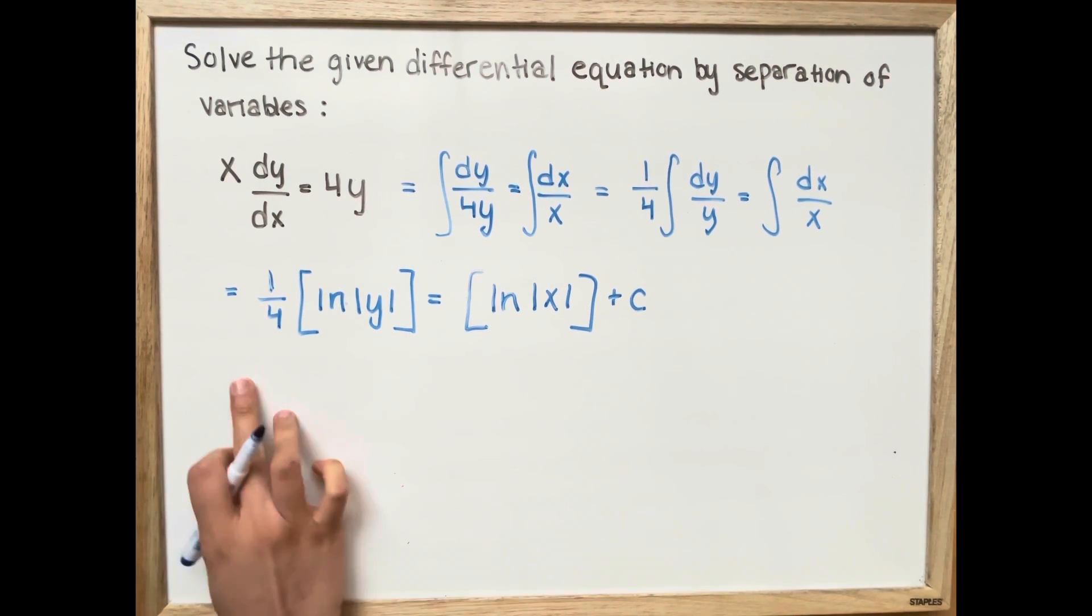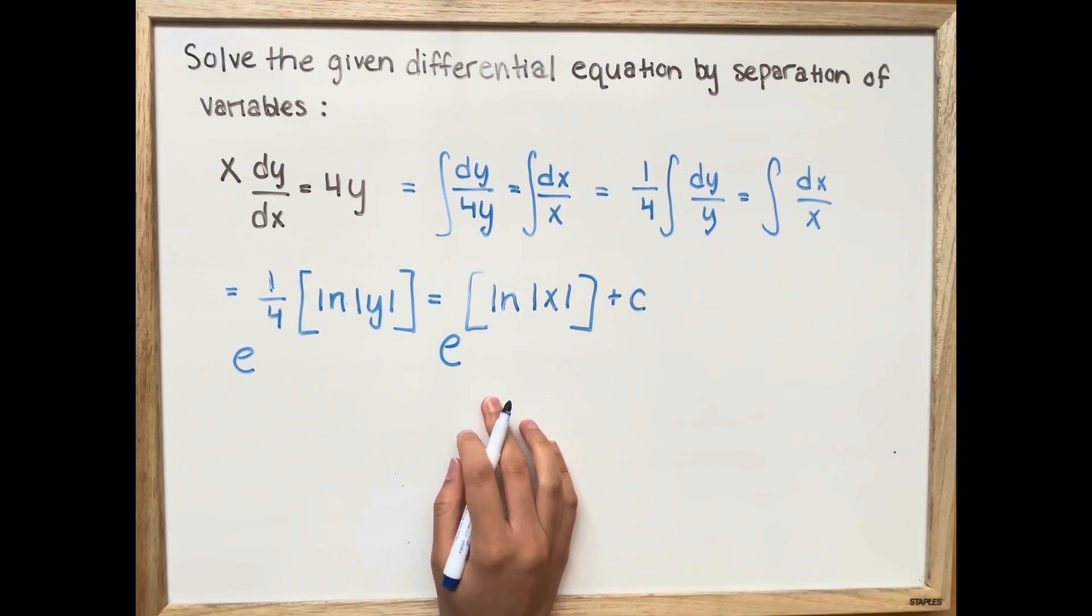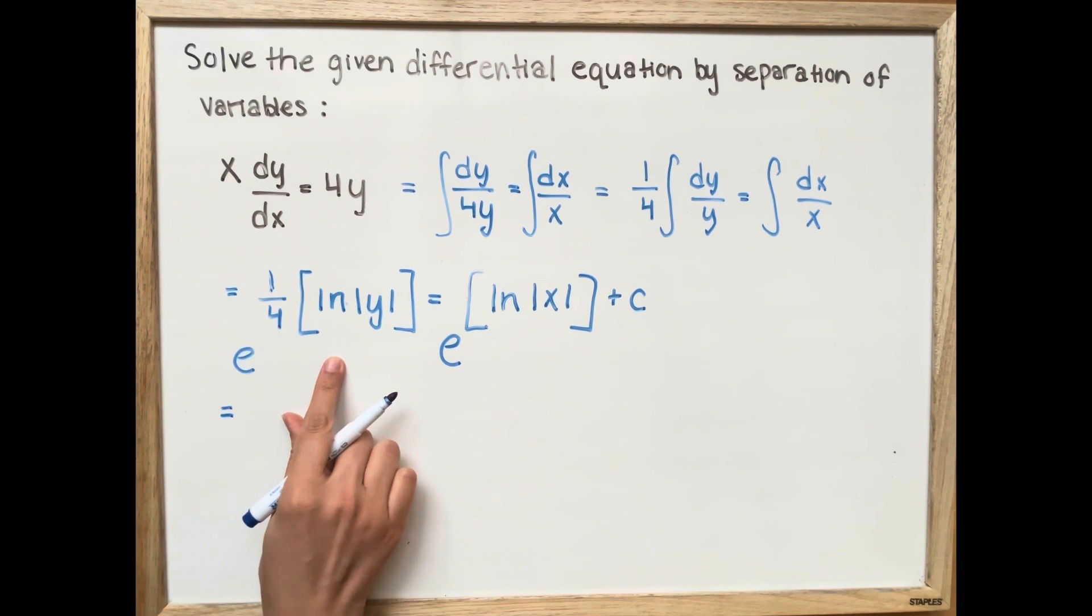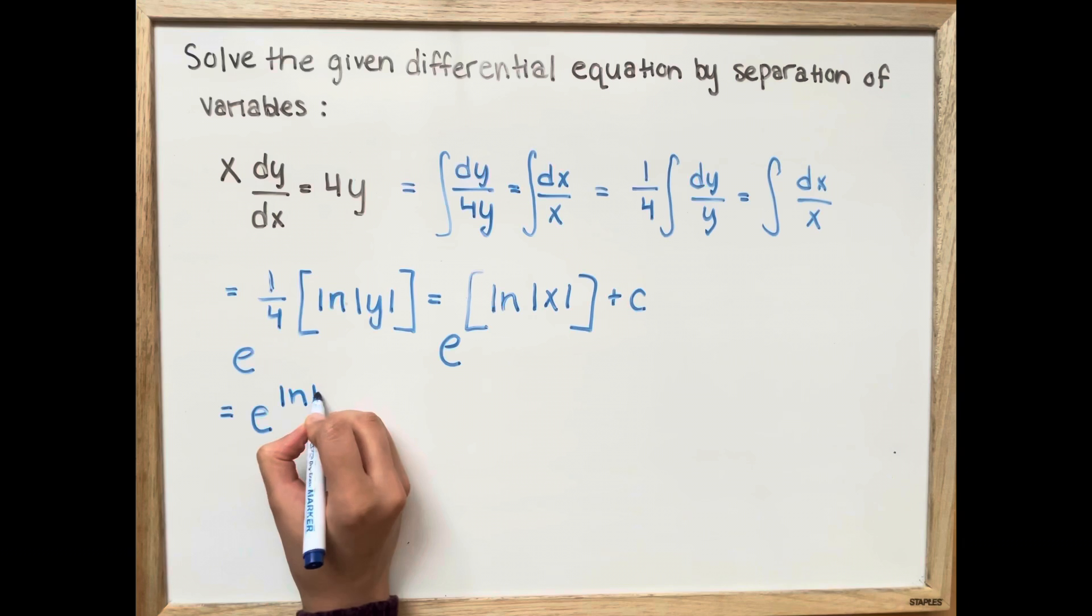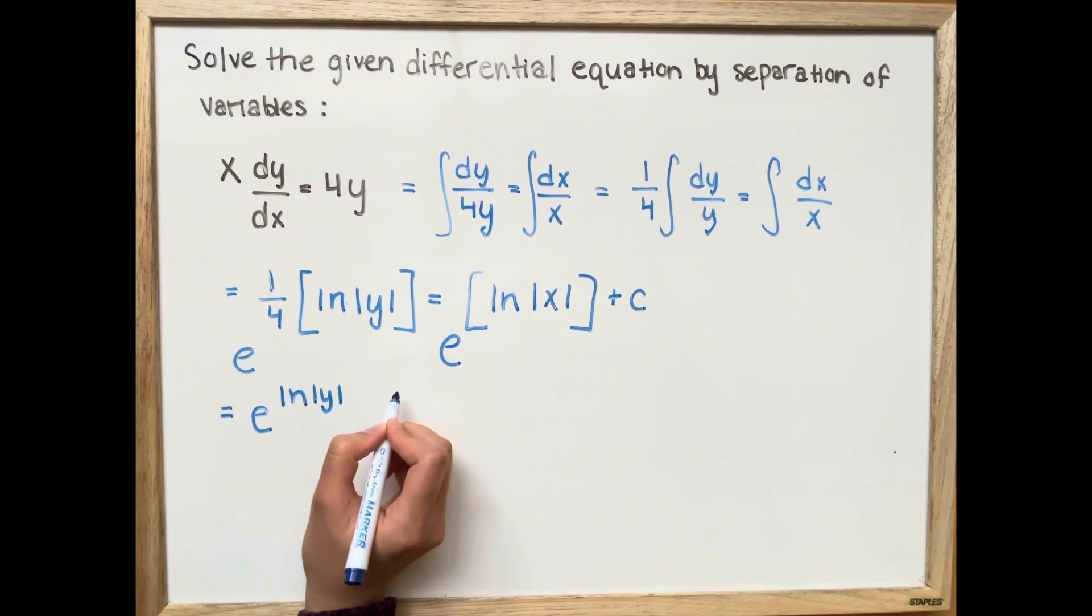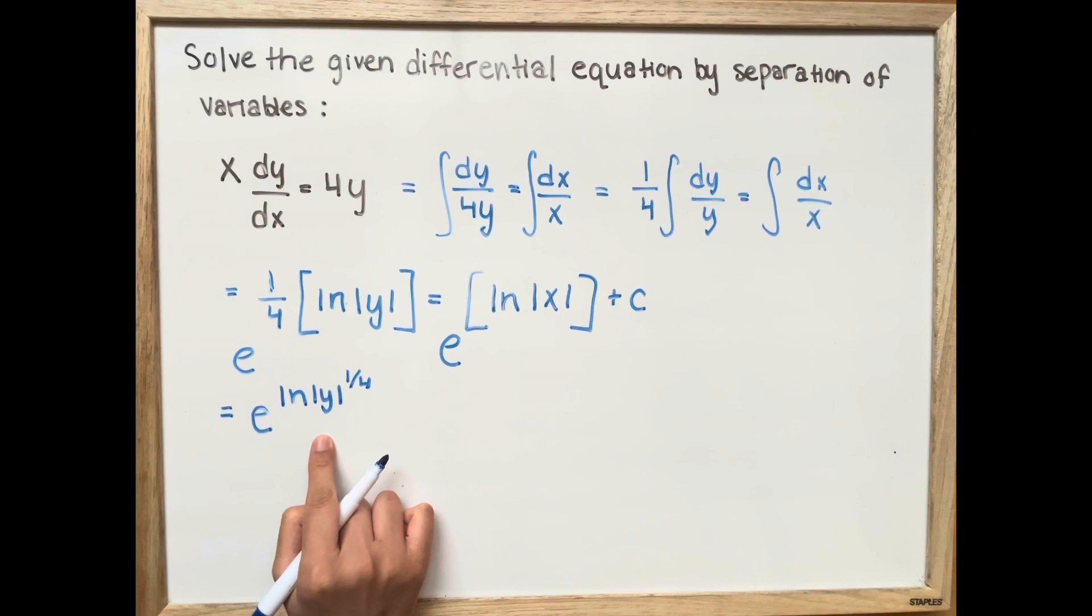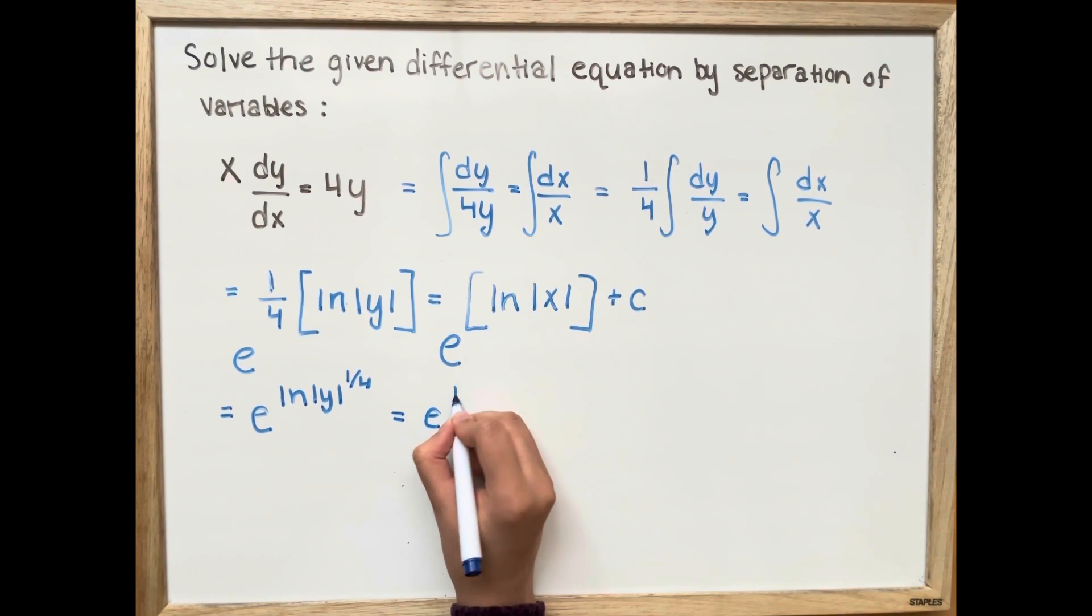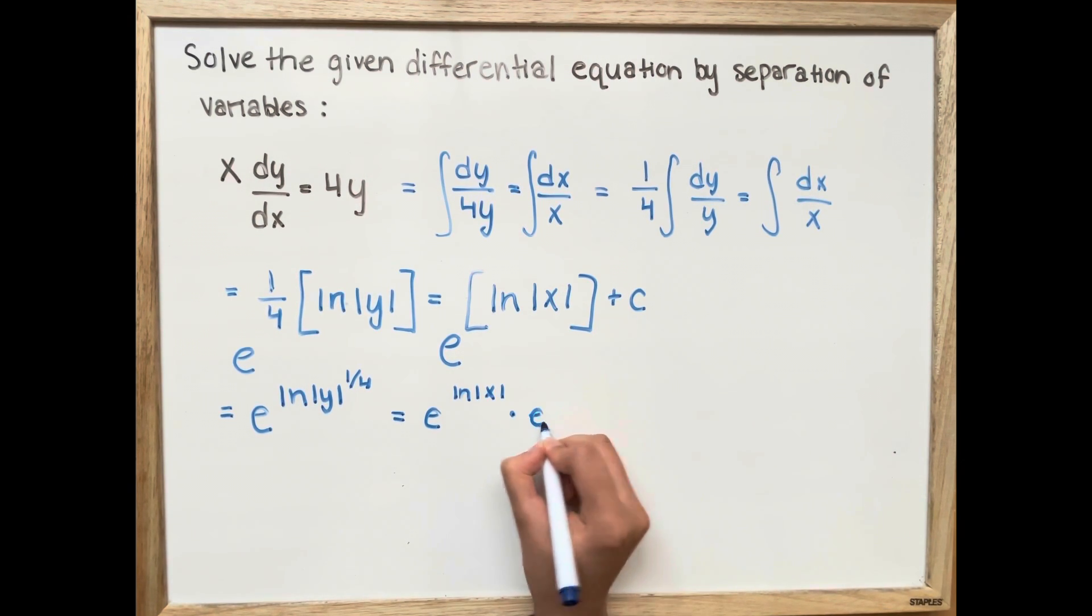So next, we're going to be taking the exponential function of both sides. We're going to rewrite this as e to the power of ln absolute value y to the power of 1 fourth. Using the exponential and ln rules, which is going to equal e to the ln of absolute value x multiplied by e to the c.